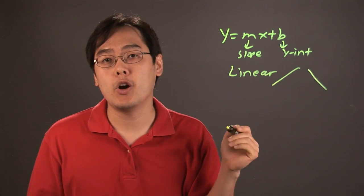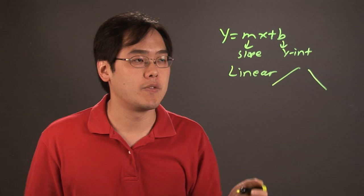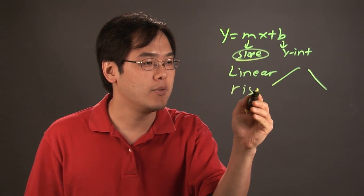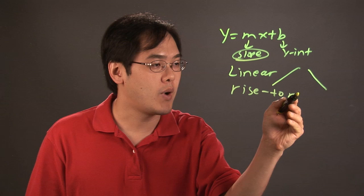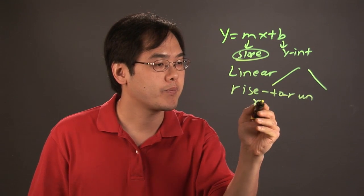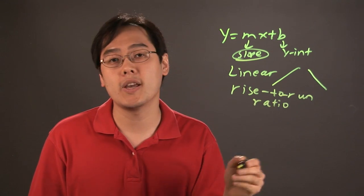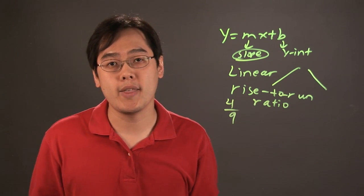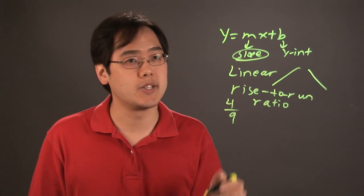One way to help the person solve the word problem that they have to use slope is talking about and using phrases that deal with the rise-to-run ratio. So you can say the rise-to-run ratio, let's just say, is 4 ninths, for example. That tells them right away that they have to use 4 ninths as part of the slope.